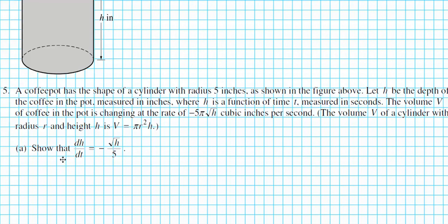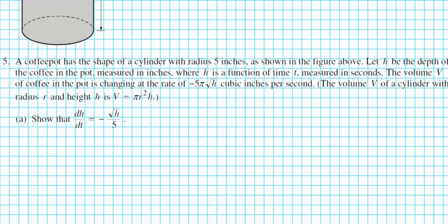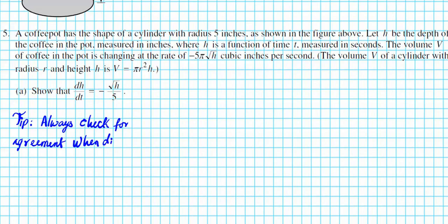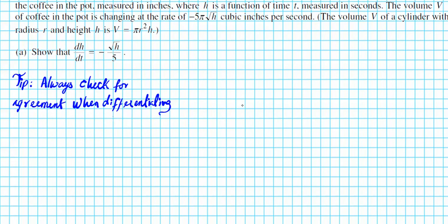Let's take a look at part A. It says show that dh/dt is equal to negative √h over 5. So we're going to be differentiating an equation here, but one thing you want to keep in mind — this is a tip — always check for agreement when differentiating. You always want to look at what you're differentiating with respect to. If the variables are different, there's a disagreement, and you have to add d of that variable over the variable you are differentiating with respect to. I'll go over this in more detail as I solve the problem.